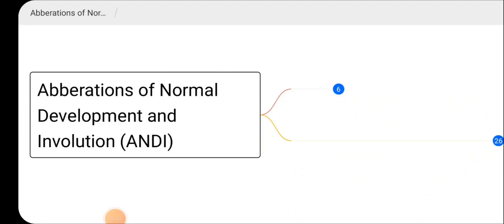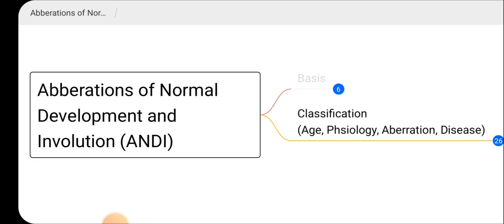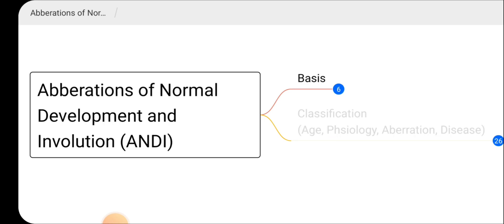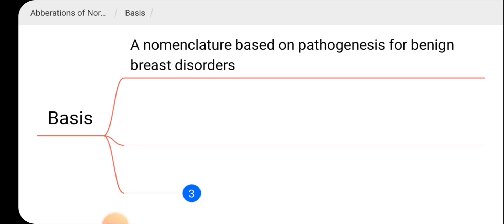Welcome to our YouTube channel. In this video we are going to discuss about Aberrations of Normal Development and Involution — in short form we call it ANDI. This is a classification for benign breast disorders. ANDI is a nomenclature based on the pathogenesis for benign breast disorders.